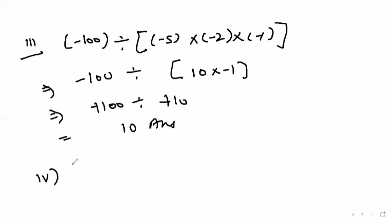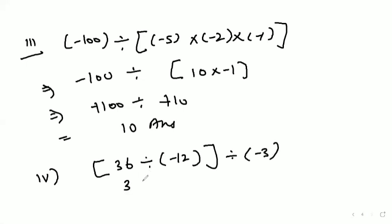Fourth part: (36 divided by minus 12) whole divided by minus 3. We solve the bracket first — 36 divided by minus 12 gives minus 3. Then minus 3 divided by minus 3 gives positive 1. Hope the third and fourth parts are clear.